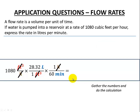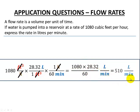Let's gather all our numbers into the calculation. There's our 1080, our 28.32 in the numerator, and our 60 in the denominator, and there's our liters per minute. So our final answer to a whole number is 510 liters per minute.